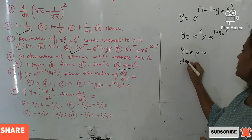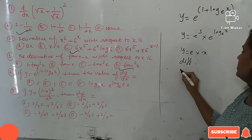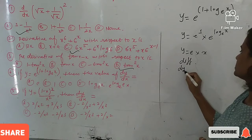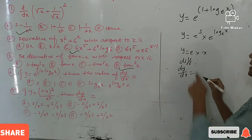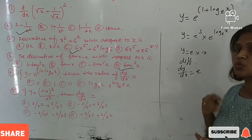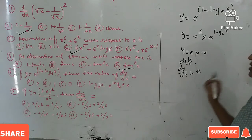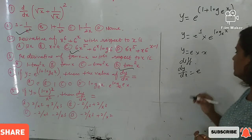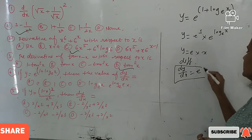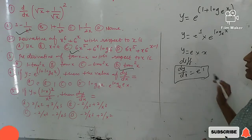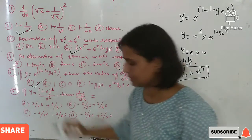Now differentiate. dy/dx: e is a constant, so it stays as is, and the derivative of x with respect to x is 1. Therefore the final derivative is e. The correct option is (a): e.